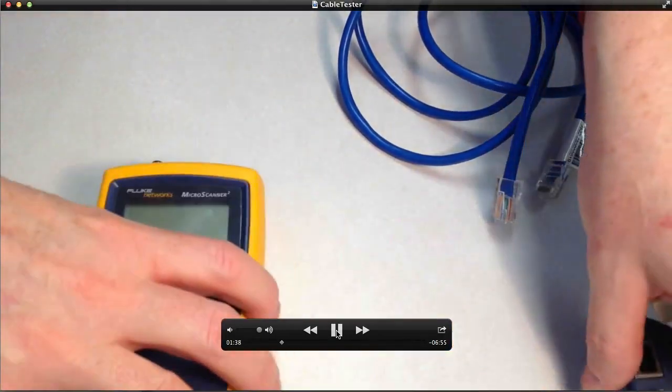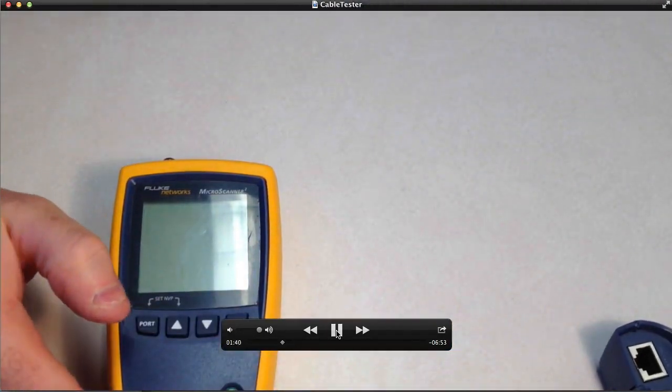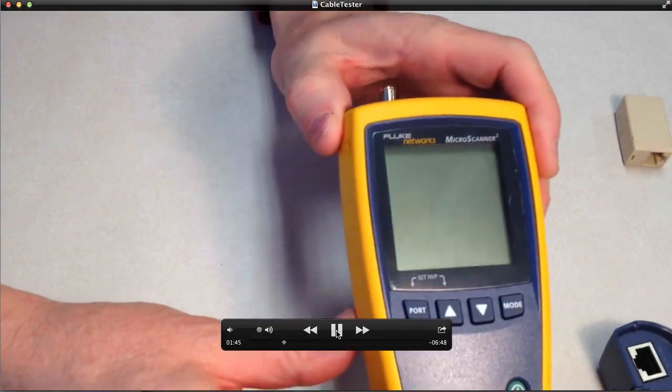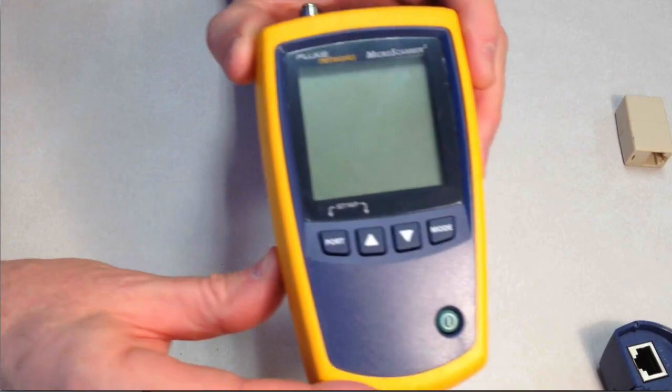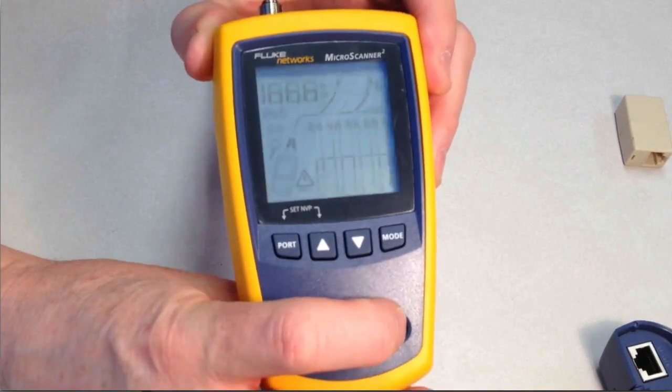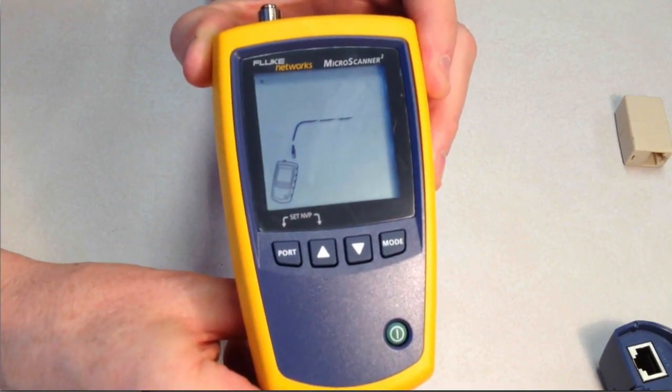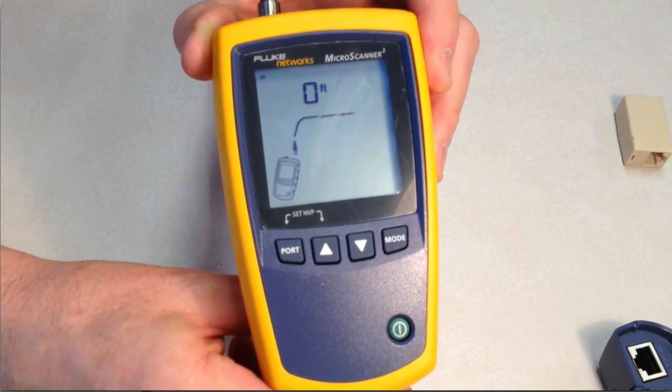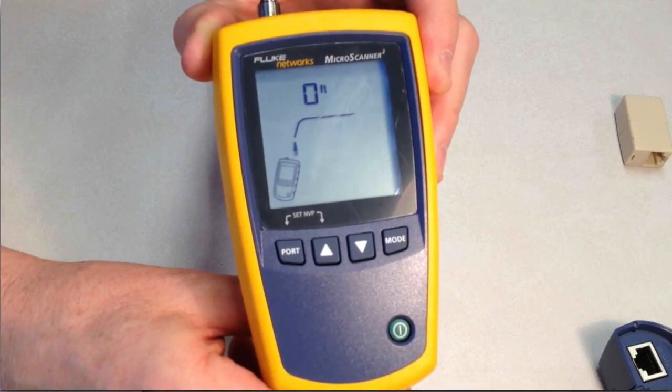Now we're going to test a different type of cable with a different cable tester, and this is a Fluke Micro Scanner 2. It's one of the newer ones for testing copper cables. It has toning capability. Right now there's no cable in it. It gives you a little more visual feedback.